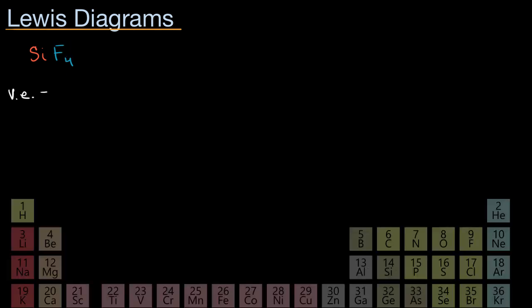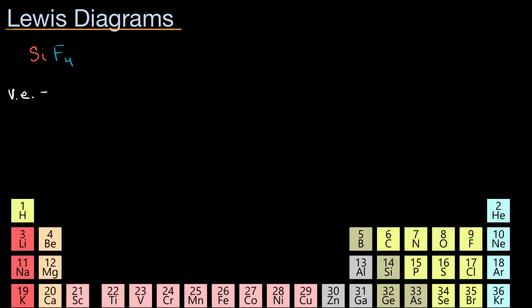Let's get out our periodic table of elements. You can see that silicon's outer shell is the third shell, and in that third shell it has four valence electrons.